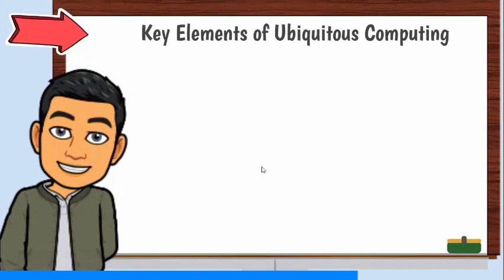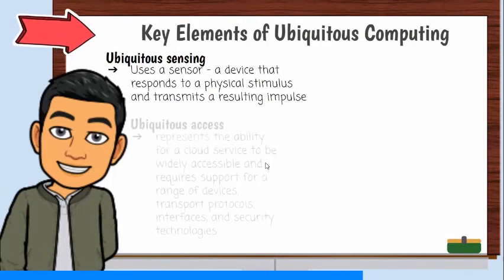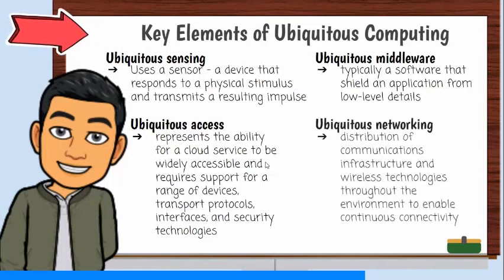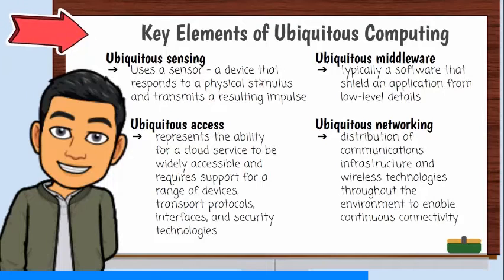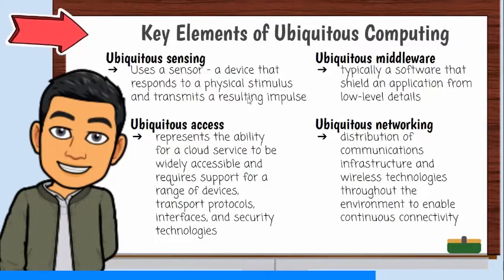To end our discussion about ubiquitous computing, let's discuss its key elements, which are ubiquitous sensing, access, middleware, and networking. Ubiquitous sensing uses a sensor — a device that responds to a physical stimulus such as heat, light, sound, pressure, magnetism, or a particular motion, and transmits a resulting impulse for measurement or operating a control. This gives systems eyes and ears, adding more awareness to ubiquitous computing.